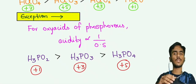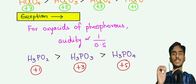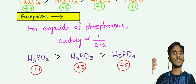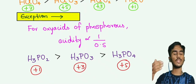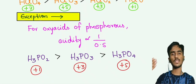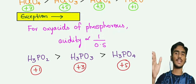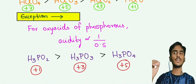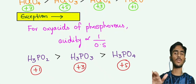In this video, we saw acidity and basicity of inorganic elements. Acidity of oxides is directly proportional to electronegativity when the central atom is different. Acidity of oxides and oxy acids is directly proportional to oxidation state when central atoms are the same. An exception is the oxy acids of phosphorus, where acidity is inversely proportional to oxidation state.